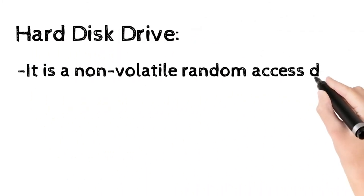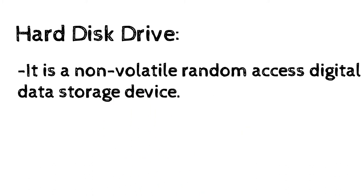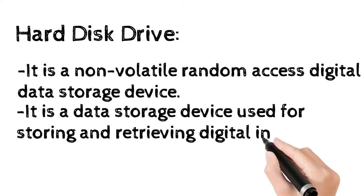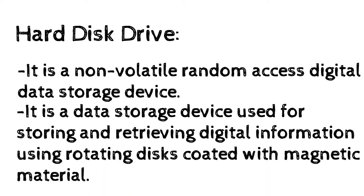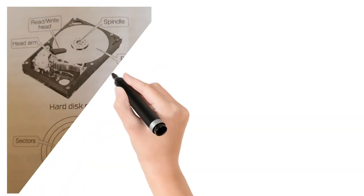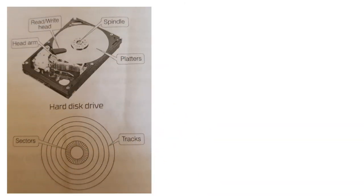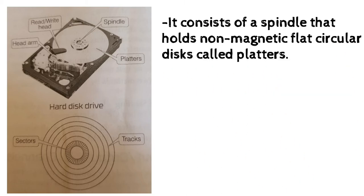Hard disk drive. A hard disk drive is a non-volatile random access digital storage device used for storing and retrieving digital information using rotating disks coated with magnetic material. All programs on a computer are installed in the hard disk within a particular drive. It consists of a spindle that holds non-magnetic flat circular disks called platters, which hold the recorded data. Each platter requires two read-write heads used to write and read information. All the read-write heads are attached to a single axis arm so that they cannot move independently.